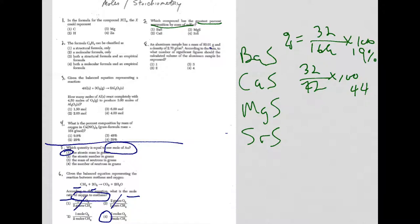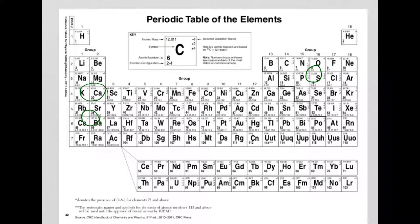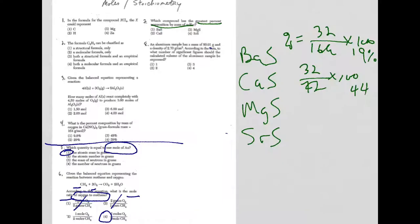Magnesium and sulfur. Magnesium is 24. 24 plus 32 is 56. So it's 32 over 56 times 100, which is like 57%.